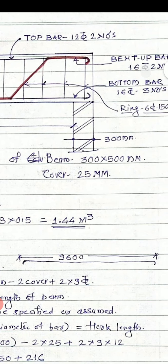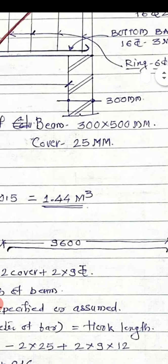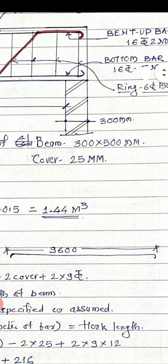Now we are going to calculate the reinforcement. First we calculate the top bar. The span of the beam is 9600 mm and the cover is 25 mm.